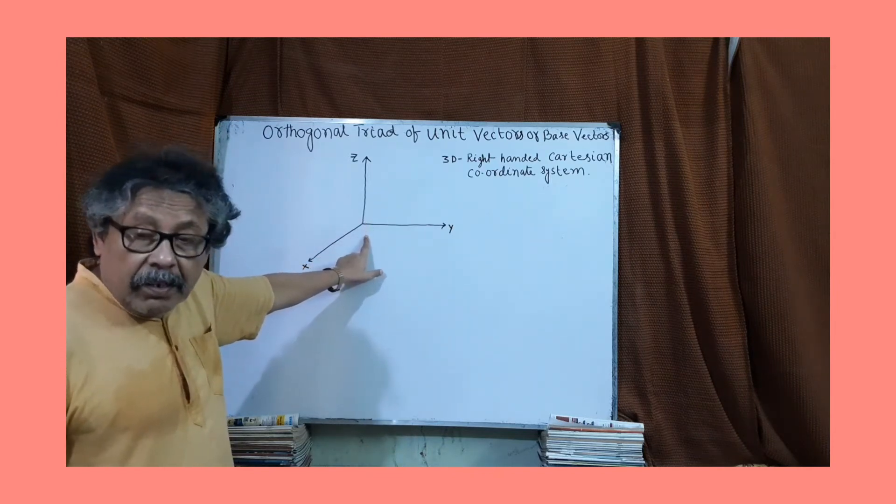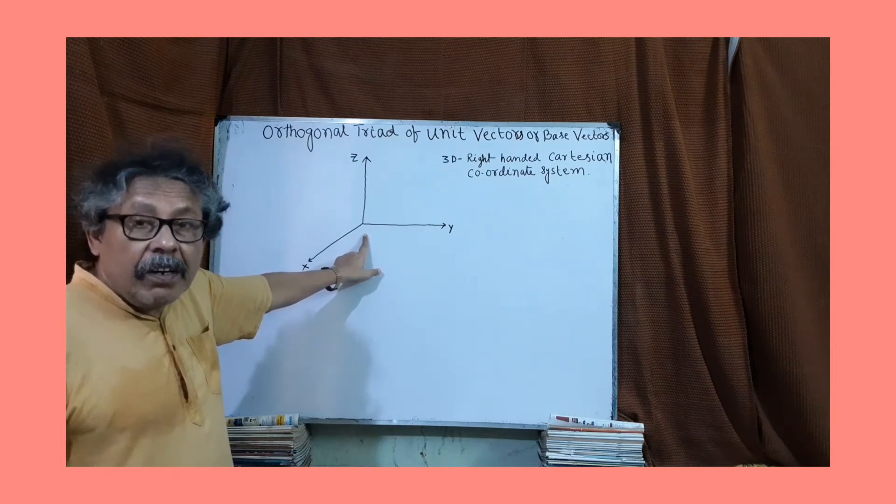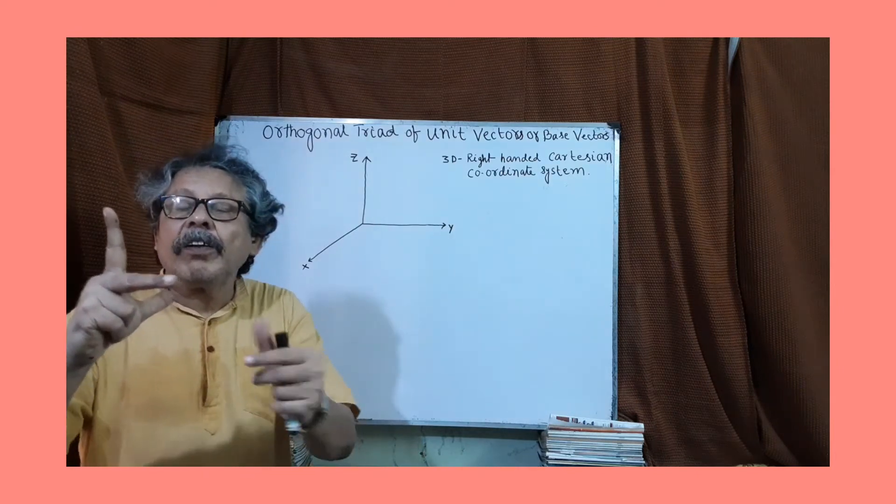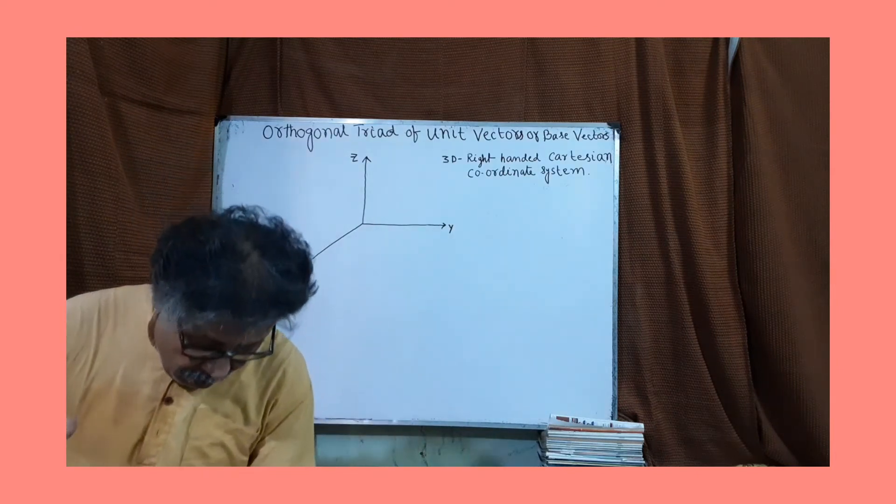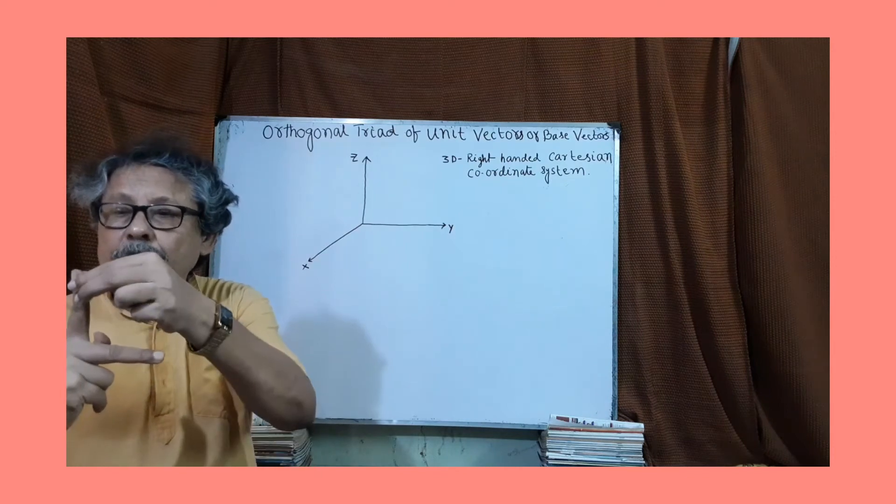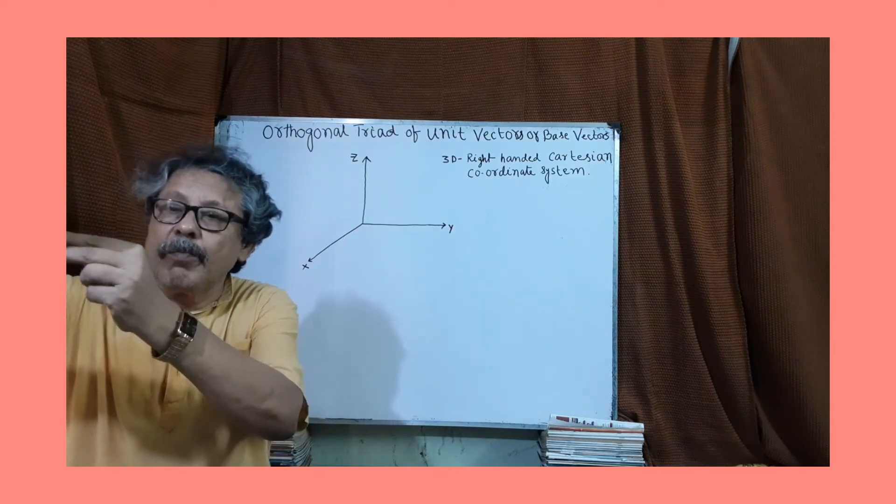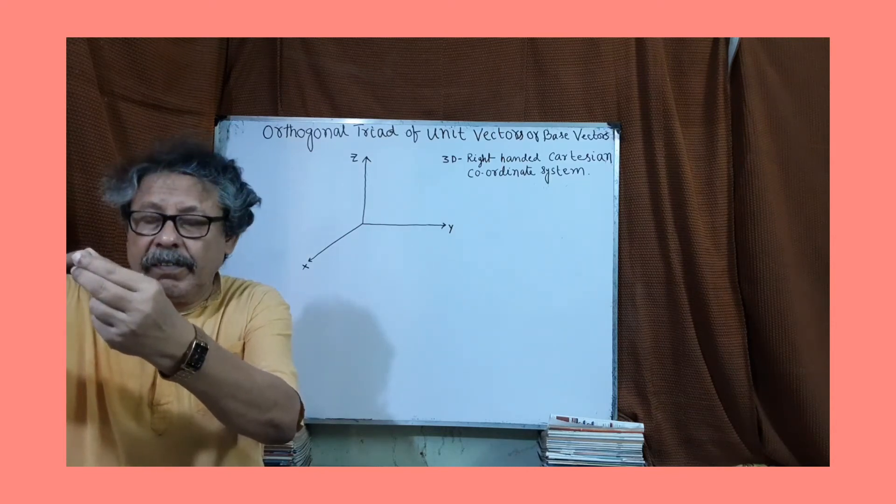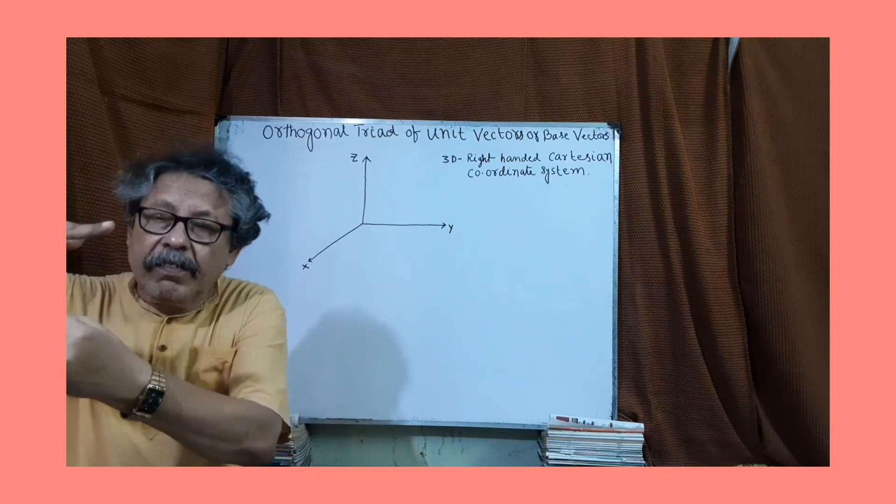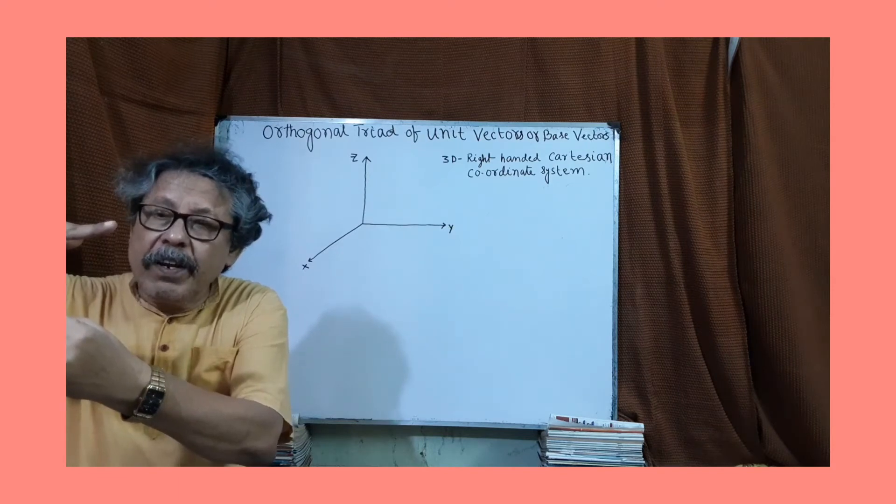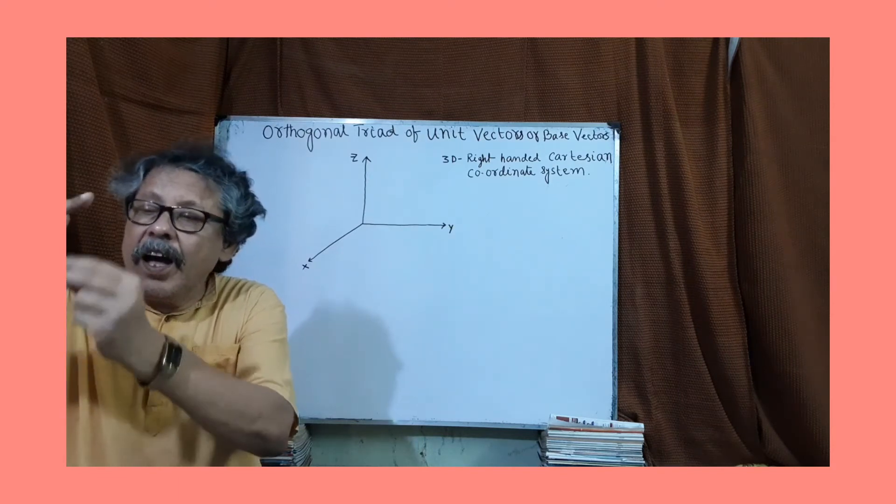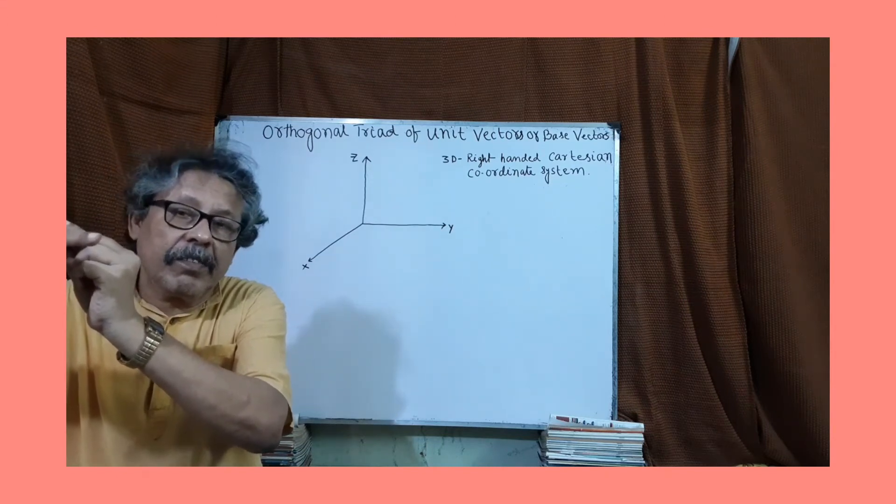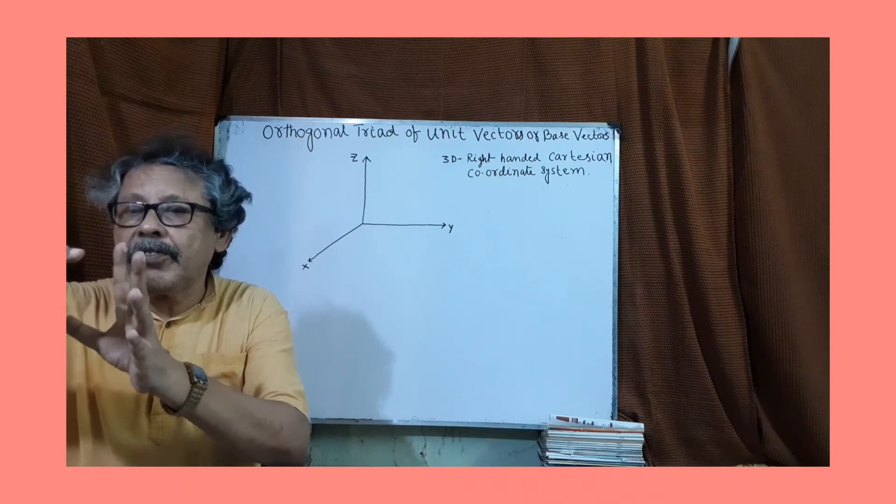How we select Cartesian coordinate system in right-handed? You extend your two fingers. This is middle finger, this is forefinger, this is thumb. This forefinger is directed along the x-axis and this middle finger directed along y-axis and this thumb directed along the z-axis. This is called right-handed Cartesian coordinate system.